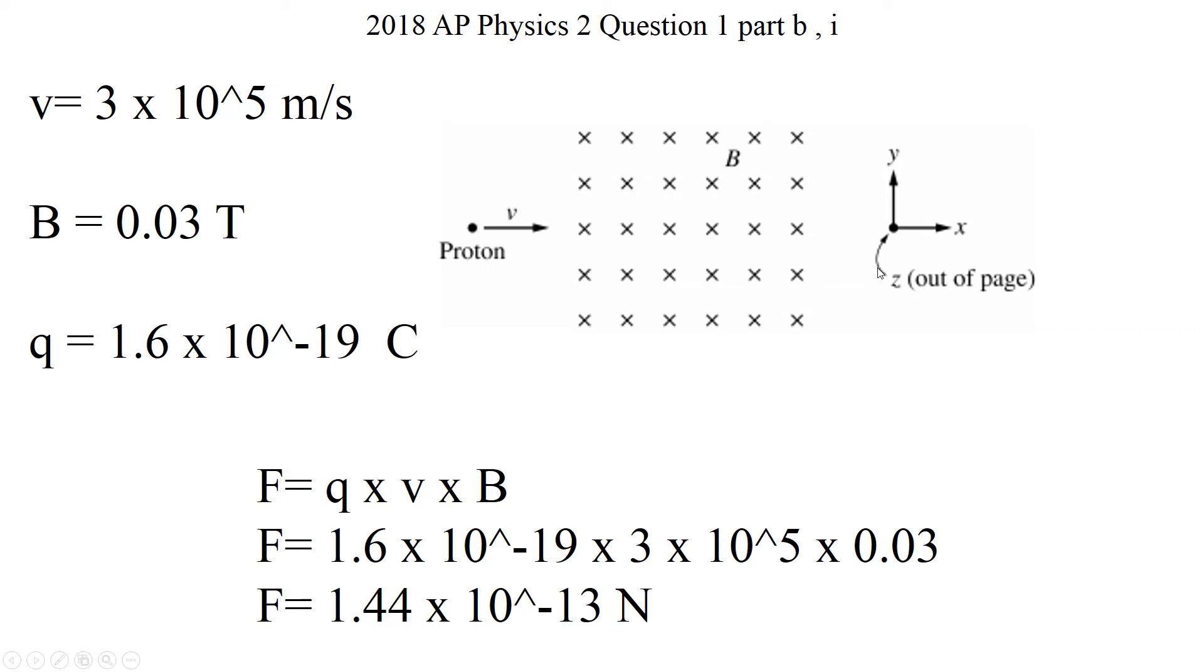The second one is a straightforward question. They're simply asking for, they give you a charge. They do not have a loop this time. They have a proton. And proton is going to go to the magnetic field. And it's going to have three times 10 to the fifth meters per second speed. And the magnetic field is going to be 0.03 Tesla. Then they're asking for what is going to be the force acting on the charge.